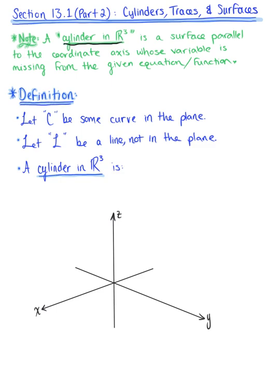To get us started, let's look at a general definition. We want to let C be some curve in the plane, and we want to let L be a line that's not in the same plane as the curve C. A cylinder in space is the set of all lines parallel to L and passing through the curve C.